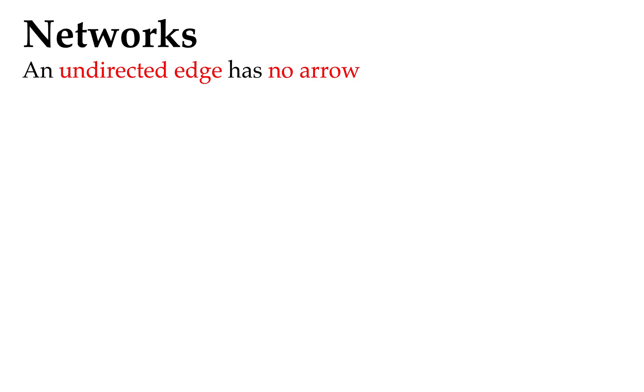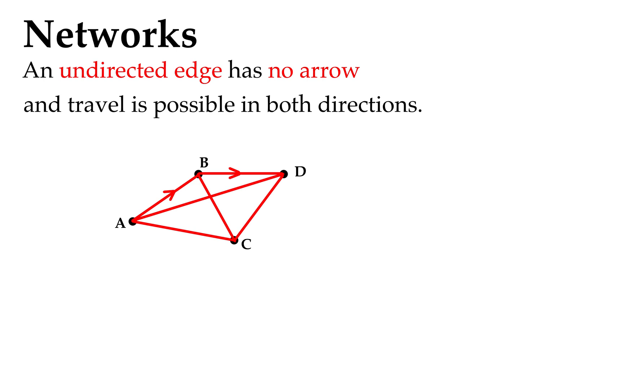An undirected edge has no arrow on it, and travel is possible in both directions. You can see that in edges AD, AC, BC, and CD. There aren't any arrows, so we can travel in any direction.